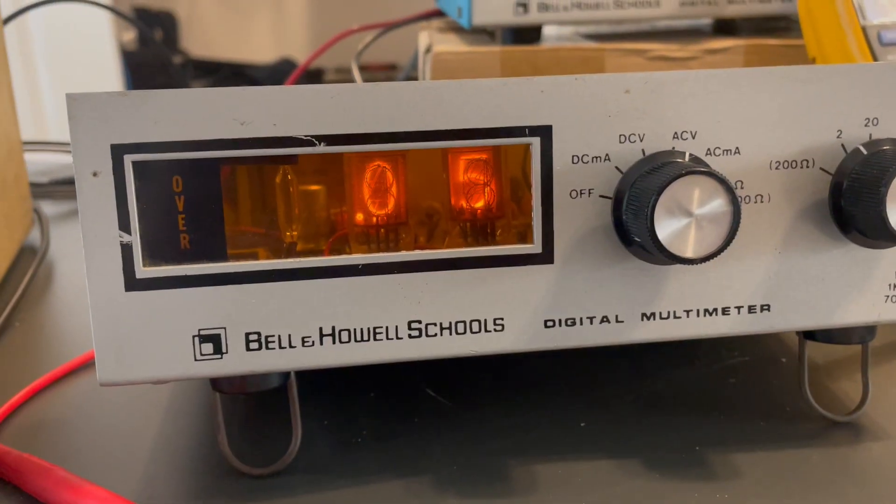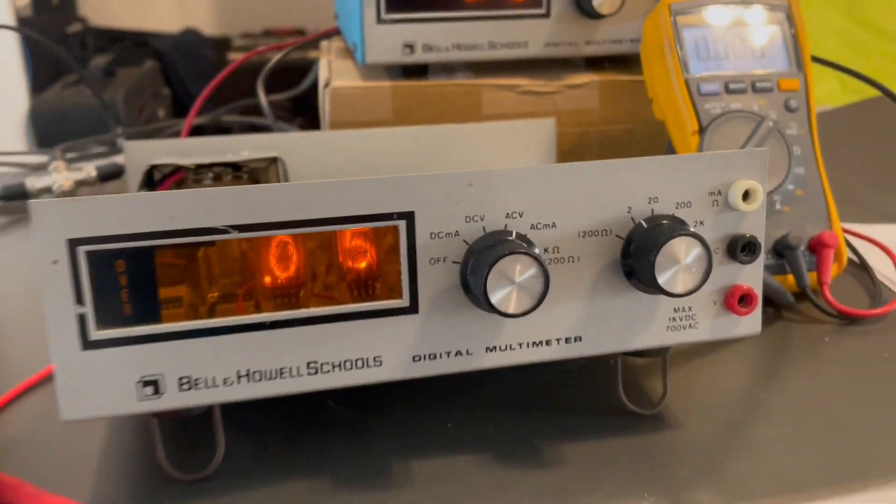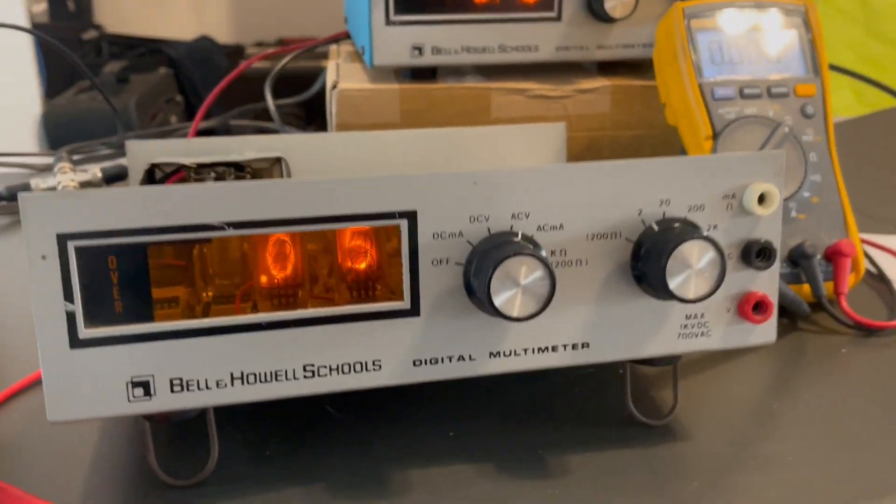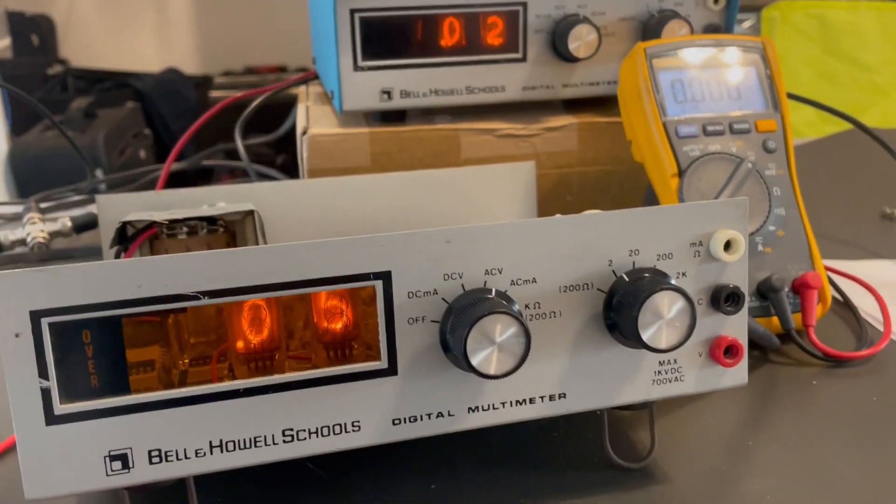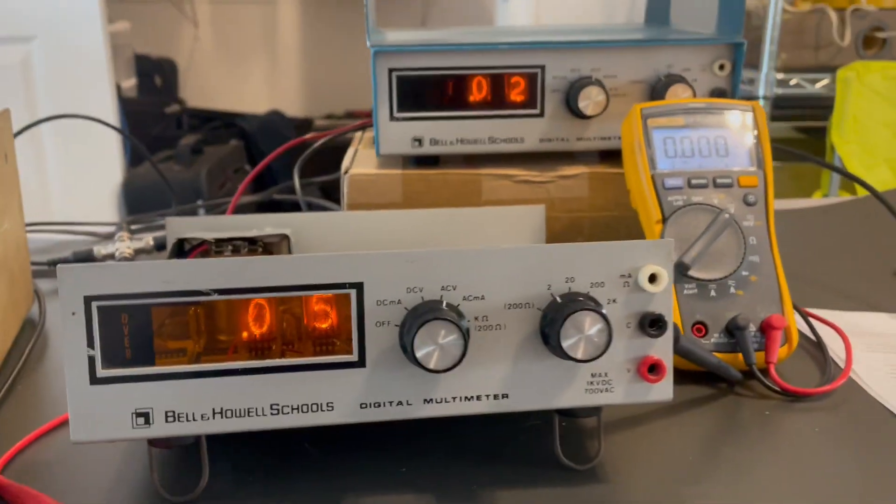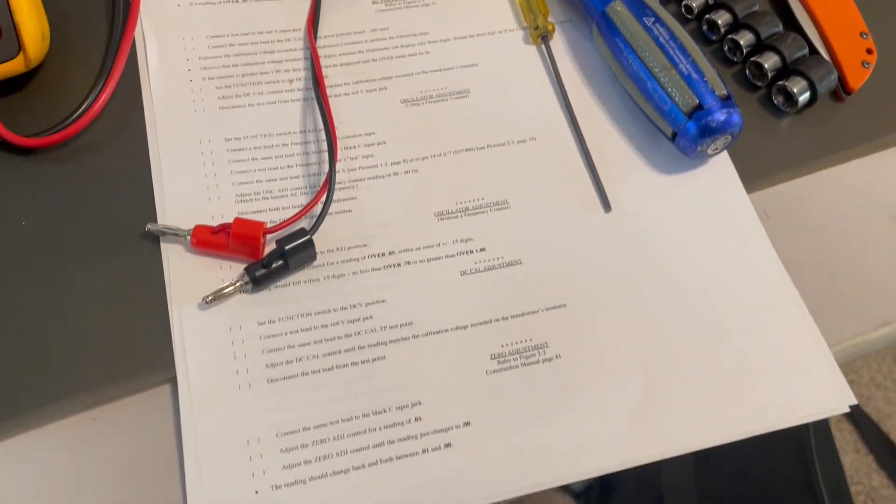These Bell Howell pieces of kit were basically a rebrand of those Heath kit IM-1212s. Same bit of kit, but they sold them to schools for their education labs. There is a relatively robust calibration procedure, but that's for all the ranges.